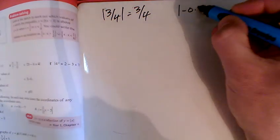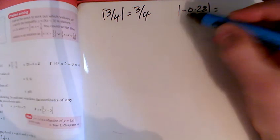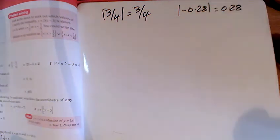Part B, the modulus of minus 0.28, just lop off the negative and it's 0.28.